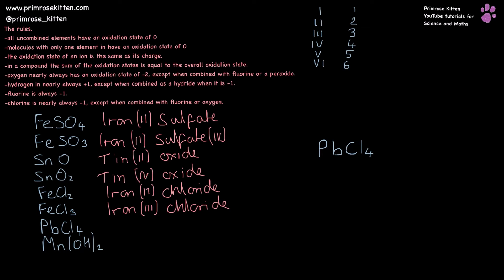PbCl4 here. Chlorine minus one times four, overall contribution of minus four, leaving lead at plus four, making it lead(IV) chloride.